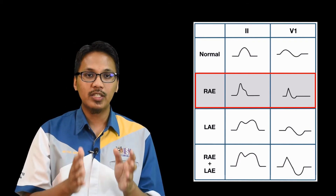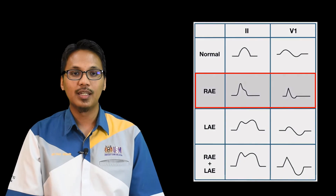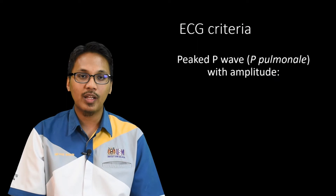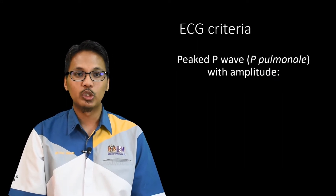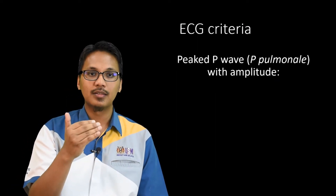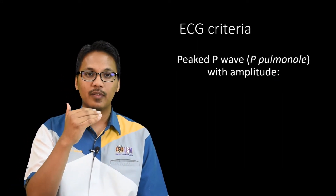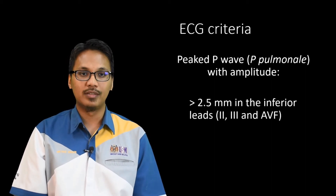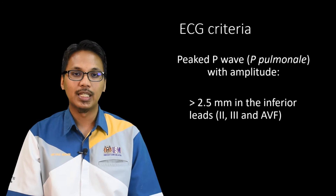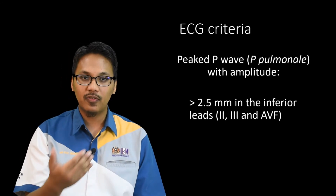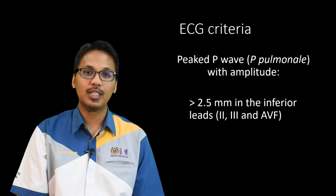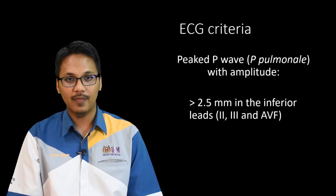What are the ECG criteria to identify a peaked P-wave, or P-Pulmonale? The first criterion is that the P-wave is more than 2.5 mm in the inferior leads, which are lead 2, lead 3, and lead AVF.